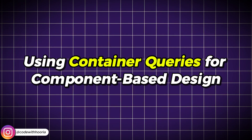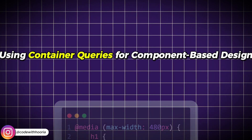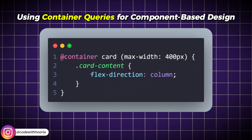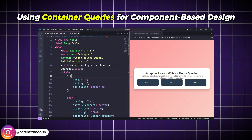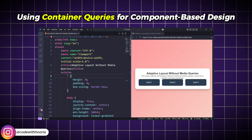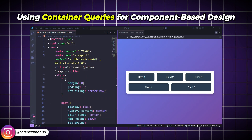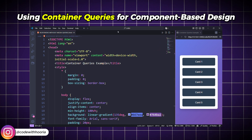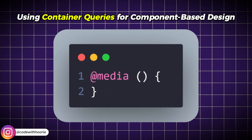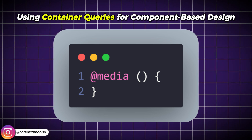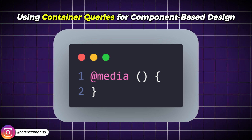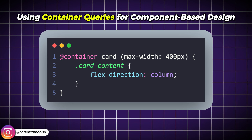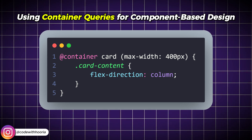One of the most exciting updates in modern CSS is container queries. Unlike traditional media queries that adjust based on the viewport size, container queries respond to the size of the container itself. This is especially useful when building components that need to adjust their layout depending on the parent element, not the whole screen. In this example, the card container will switch its content to a column layout when its width becomes 400 pixels or smaller. Unlike media queries, this change happens based on the container's size, not the viewport's size, allowing for more modular and flexible designs. Use container queries for cards, grids, or UI components that need to adjust when placed inside different layouts like sidebars, modals, or nested sections.